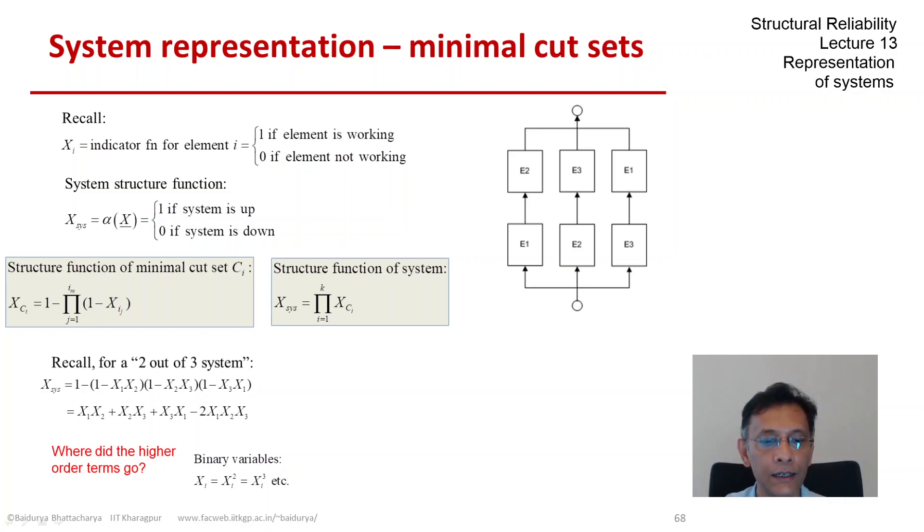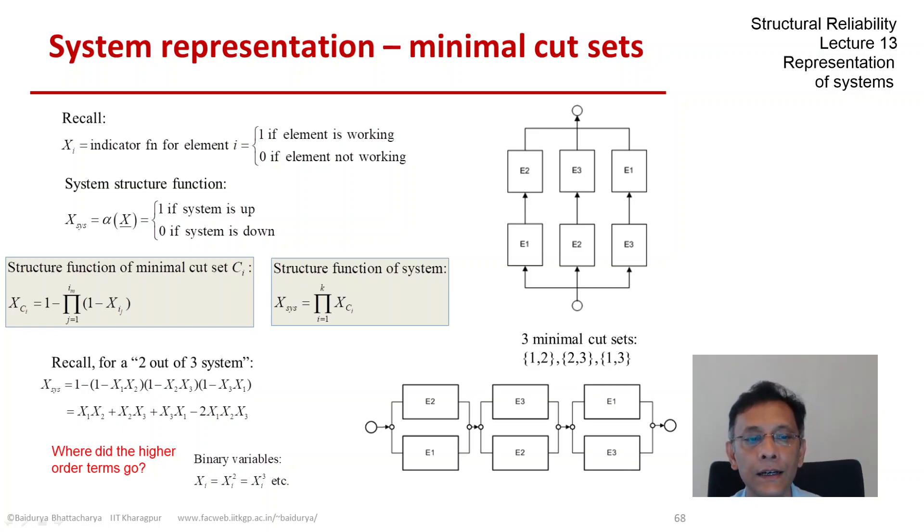In terms of this system, there are three minimal cut sets: 1,2, 2,3, and 1,3. We can write an equivalent block diagram by putting these cut sets in series. These two block diagrams are completely equivalent and if you write out each cut set's structure function and then multiply them together, you will arrive at the system structure function that you see in the second line which is x1 x2 plus x2 x3 plus x3 x1 minus twice x1 x2 x3.